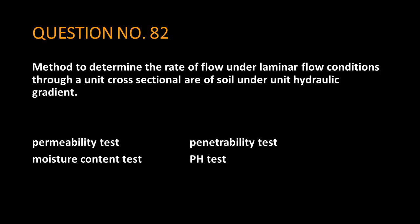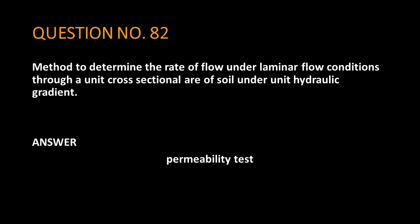Question No. 82. Method to determine the rate of flow under laminar flow conditions through a unit cross-sectional area of soil under unit hydraulic gradient. The answer is permeability test.